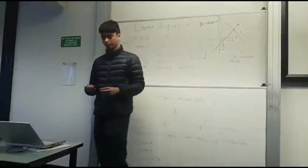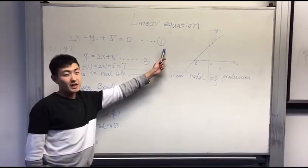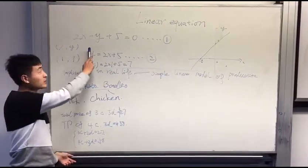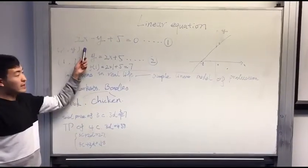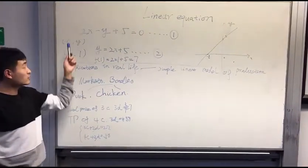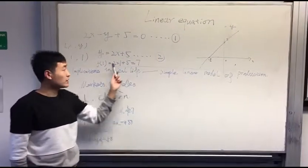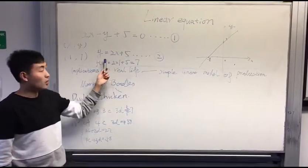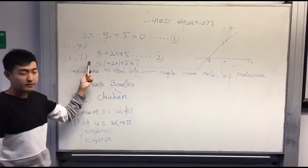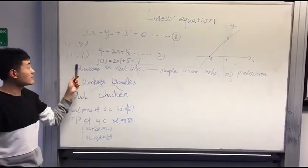I would like to talk about the results of linear equations with two variables. First, we can see the normal equation is 2x minus y plus 5 equals 0. If we want to work with the equation, we can first convert equation 1 into equation 2, which is y equals 2x plus 5, because this is easier to calculate and understand.